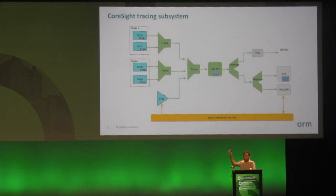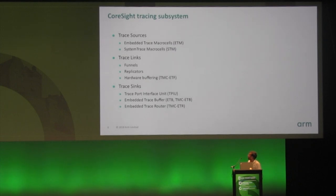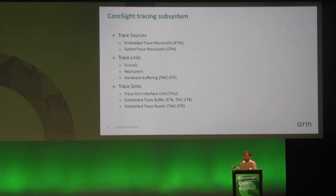There are funnels which aggregate multiple streams of trace data, and replicators which can duplicate that into multiple different sinks. There is also the ETL, which has a small hardware buffer that can be used for buffering to make sure that transmission is smooth when data transfer rates are slightly different between sources and sinks. For the rest of the conversation we will concentrate on the ETM — the Embedded Trace Macrocell — and the TMC-ETR.